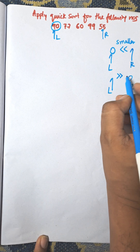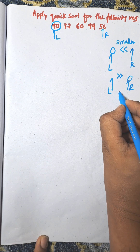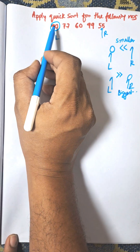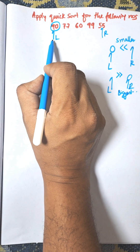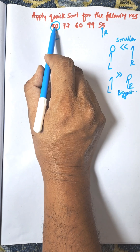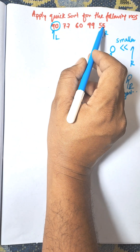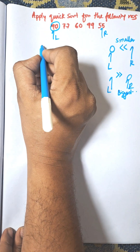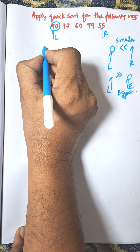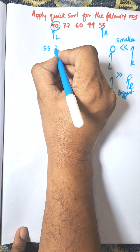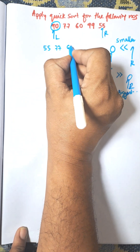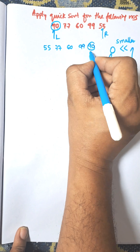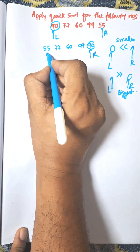Here, L is pointing to 90 and R is pointing to 55. Since 90 is greater than 55, they are swapped, giving us: 55, 77, 60, 99, and 90. Now the pivot moves to the rightmost position.